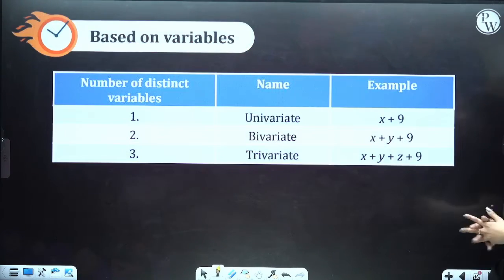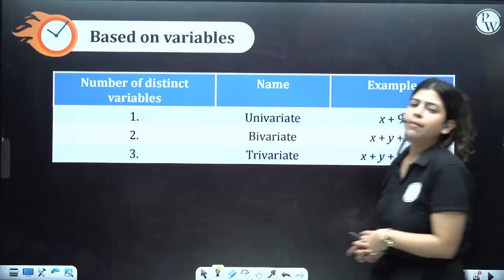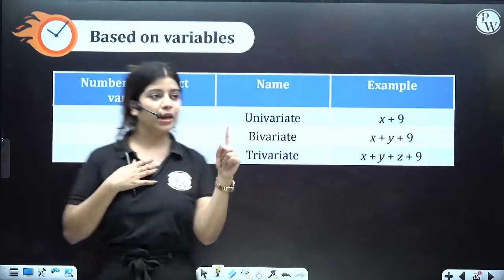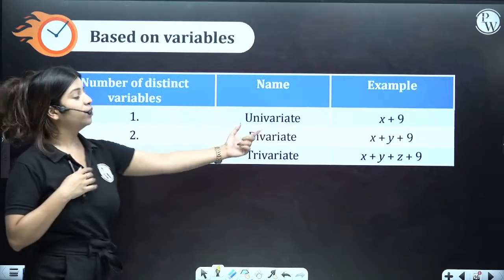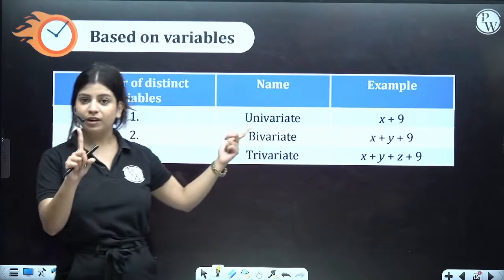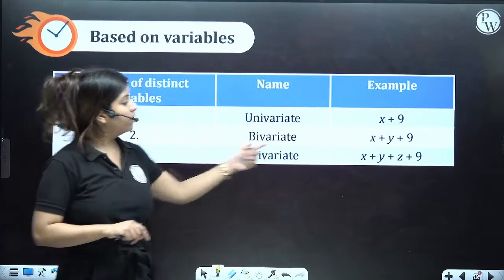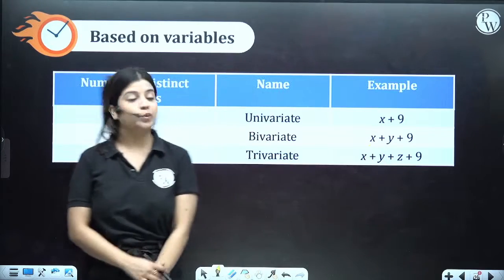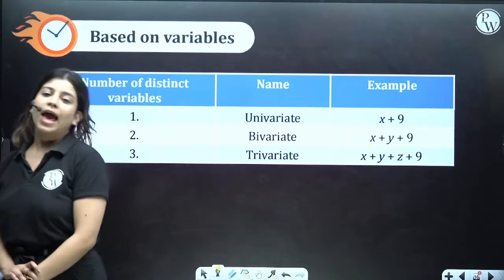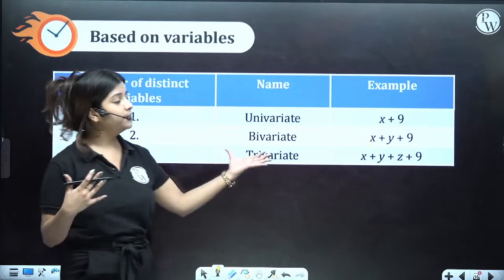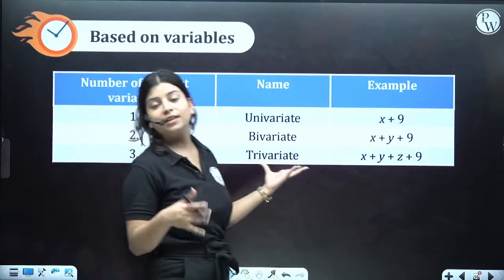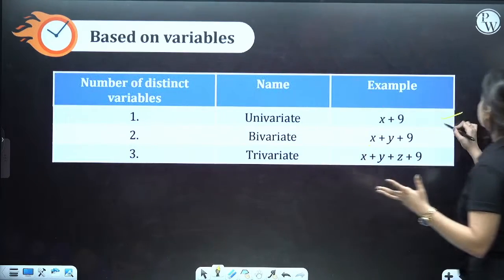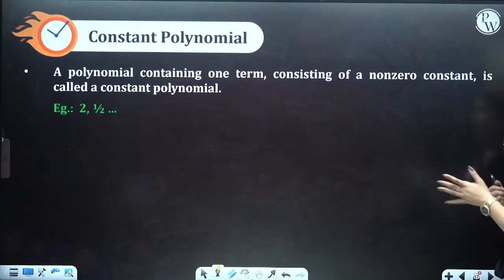Based on the number of variables: one variable is known as univariate. If we have two different variables in the polynomial, that is known as bivariate. If we have three different variables, it is called trivariate. However, we will only focus on univariate polynomials.